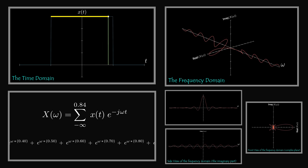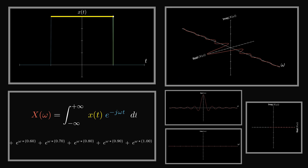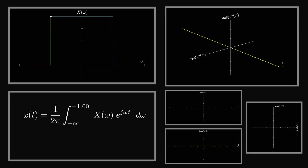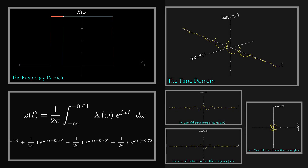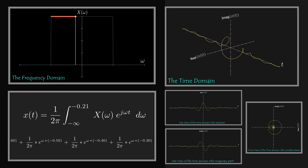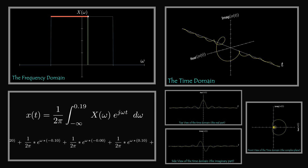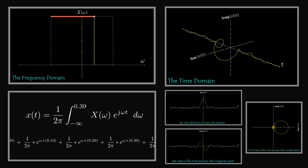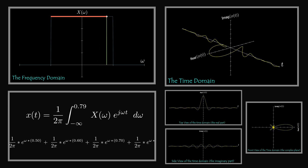Since we sum infinite complex exponentials corresponding to infinite points constructing the continuous signal, the summation becomes an integral. The same thing applies to the frequency domain. If we have a frequency domain signal, then its corresponding time domain is the summation of the infinite time domain complex exponentials corresponding to the infinite frequency domain points constructing the signal. This is the inverse Fourier transform, which tells us that any time domain signal can be decomposed into an infinite sum of time domain complex exponentials.